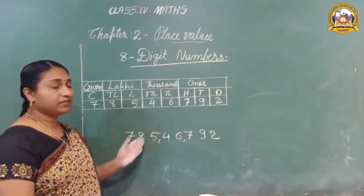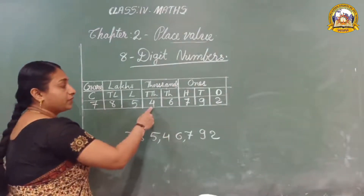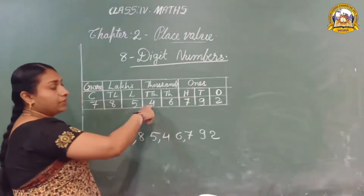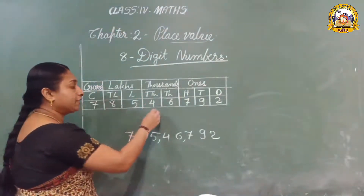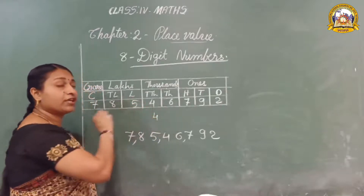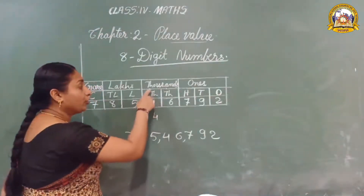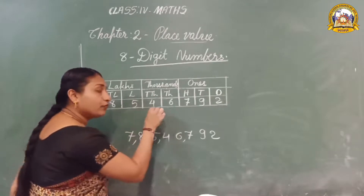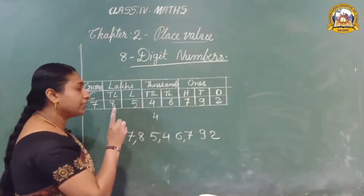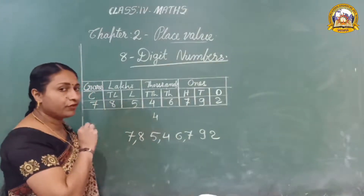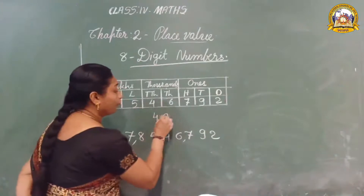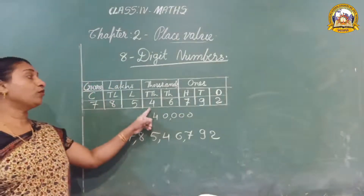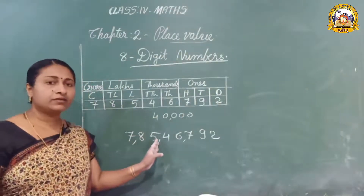Can you say the place value of each digit? For example, the place value of four in this number — four into ten thousand. Four into ten thousand: how many zeros are needed? In ten thousand we know there are four zeros — one, two, three, four. That is the place value of four in this number: forty thousand.